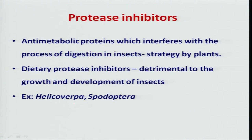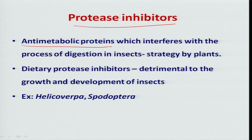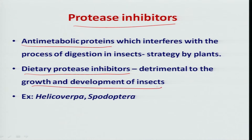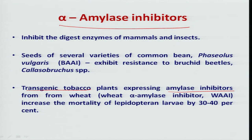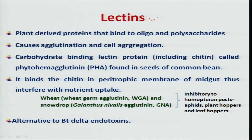Genes derived from plants, such as protease inhibitors, have also been transferred. Genes expressing anti-metabolic proteins that interfere with insect metabolic activity, as well as dietary protease inhibitors affecting growth and development of chewing insects, have been used. Alpha amylase inhibitors have also been employed — transgenic tobacco plants expressing amylase inhibitors derived from wheat have resulted in significant mortality of lepidopteran larvae, as experimentally proved. Lectin compounds have also been used.